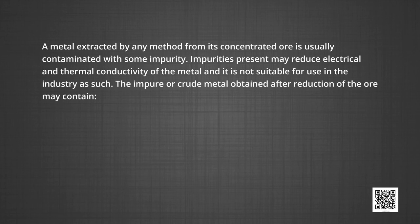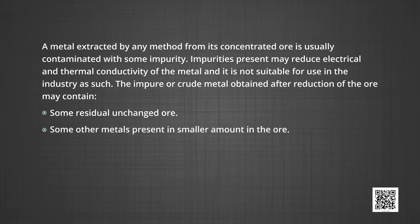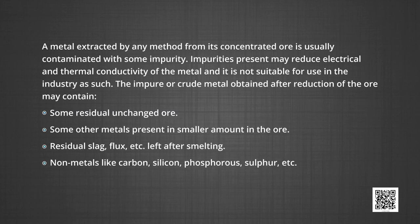The impure or crude metal obtained after reduction of the ore may contain some residual unchanged ore, some other metal present in smaller amount in the ore, residual slag, flux, etc. left after smelting, nonmetals like carbon, silicon, phosphorus, sulphur, etc.